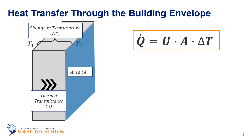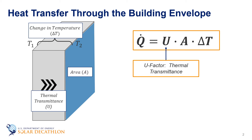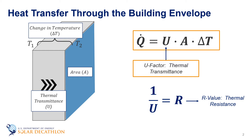Going back to the heat transfer equation, we see that to calculate the heat transfer going through the building envelope, we need the U-factor or its reciprocal, the R-value. We will devote this episode to finding that R-value. As we look at the R-value of insulation, we need to figure out how to calculate the total R-value of a wall.